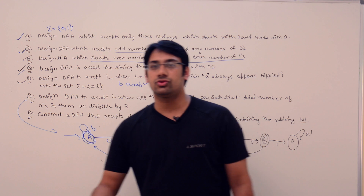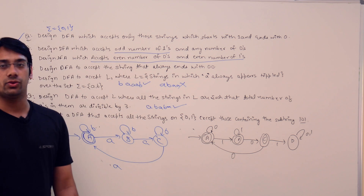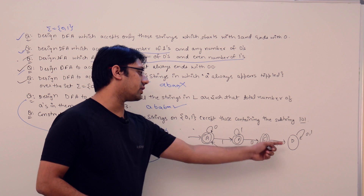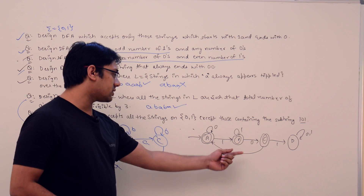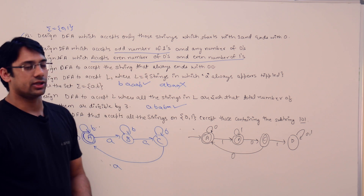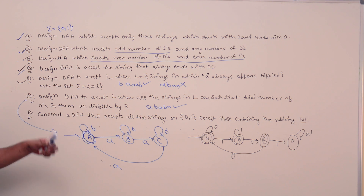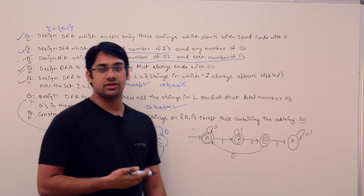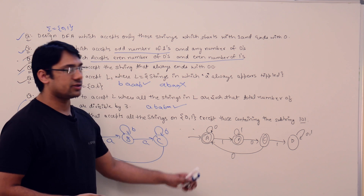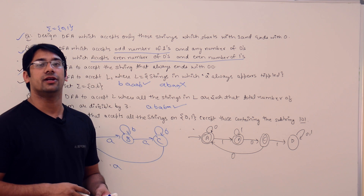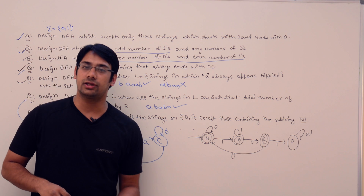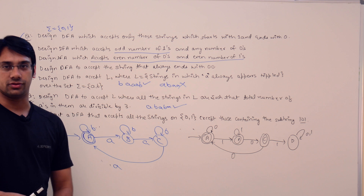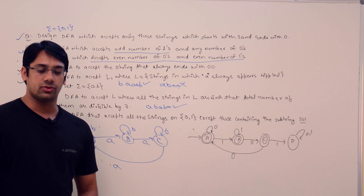What we are doing is assuming we will detect the pattern 1, 0, 1. If we are not getting 1, 0, 1, we go back to state A. This DFA is self-explanatory. After doing so many questions, I think it explains itself. If you feel any problem, just let me know in the comment section and I will reply or make a video for it. Let us move on to the next questions.